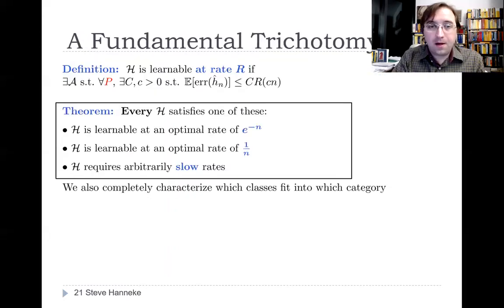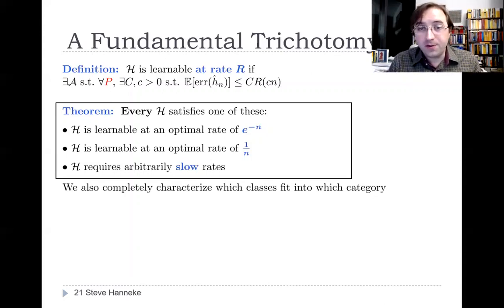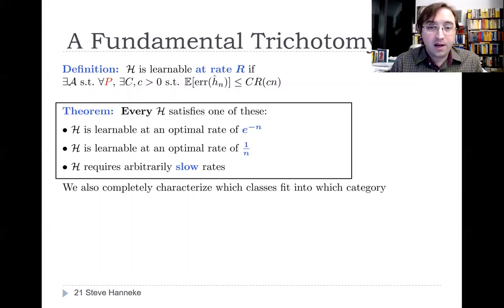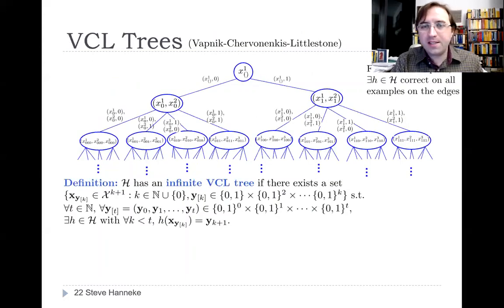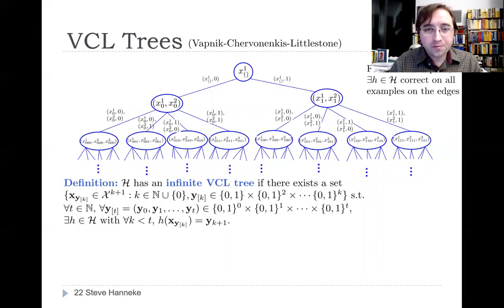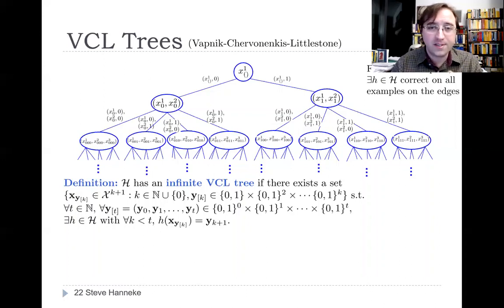What we've covered so far is the distinction between exponential versus linear rates. Now I'll briefly explain an analogous result for the distinction between linear rates versus arbitrarily slow rates. This part is quite a bit more complicated, but it's interesting how the same ideas come up, except now in a kind of model selection component. There's also a structure that determines whether or not linear rates are achievable. We call this a VCL tree, and it really combines elements of Littlestone trees and the VC dimension.